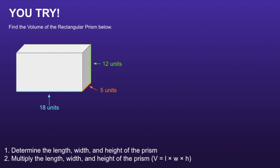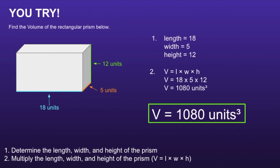Alright, let's take a look. The volume of the rectangular prism is 1080 units cubed. If you had this incorrect, I would recommend you go back and see if you can find your mistake. Thank you for watching!